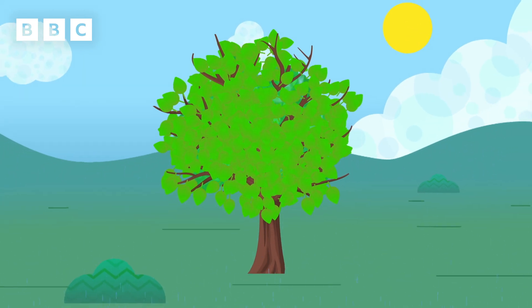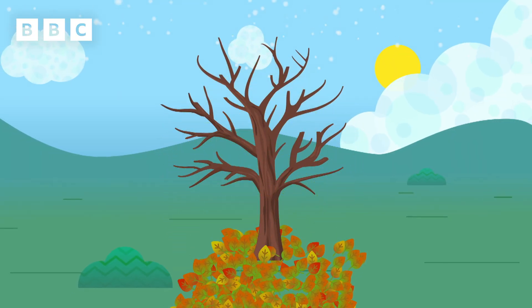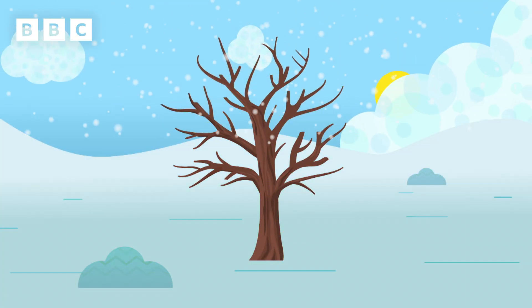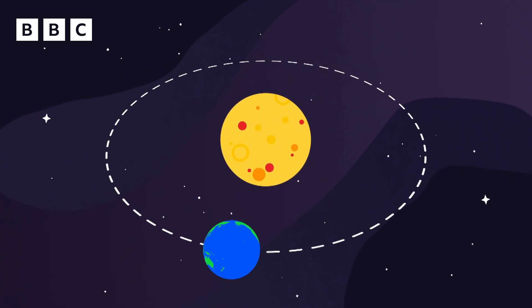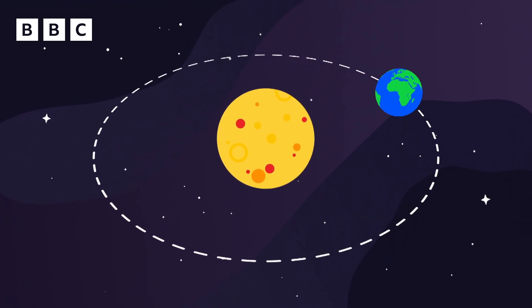You might also notice that the weather changes when the seasons change. Spring and Summer are usually warmer, and Autumn and Winter are usually cooler. But why do the seasons change? It's to do with the way the Earth orbits, or moves, around the sun, which takes a full year to complete.